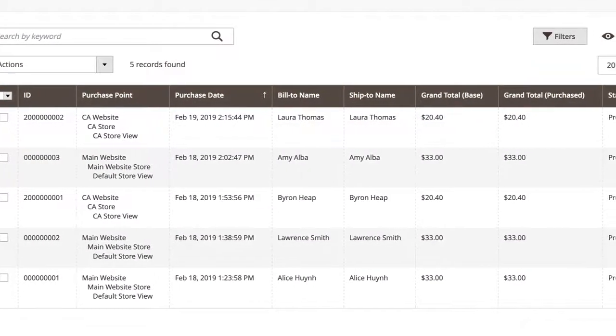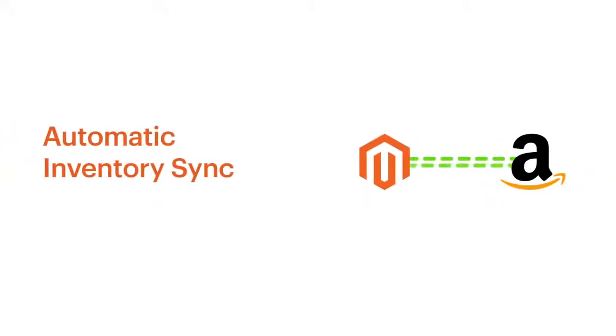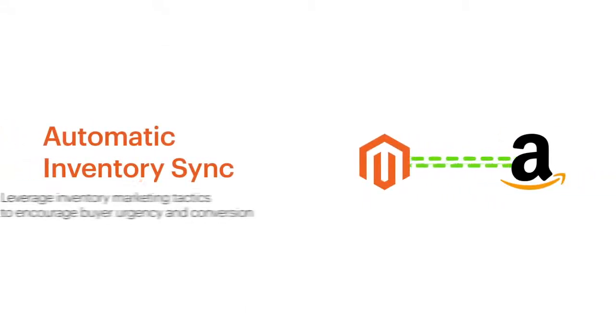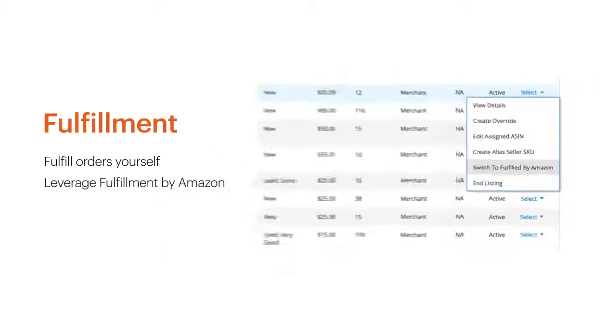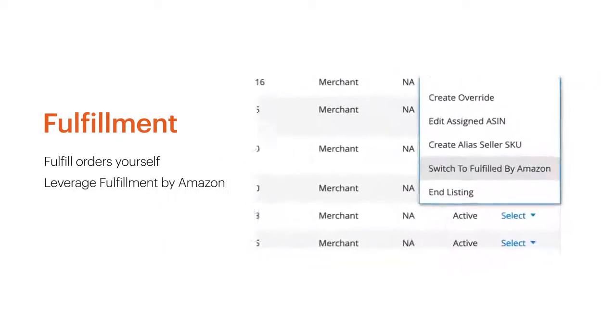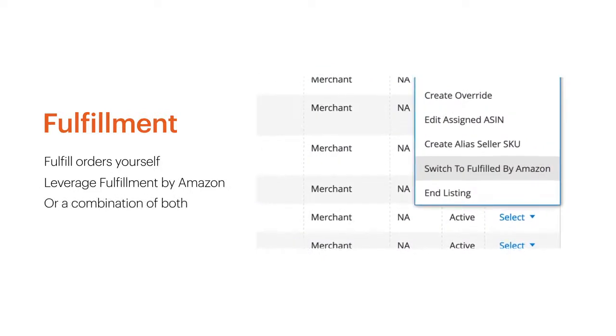Keep inventory in sync with Amazon orders automatically and leverage inventory marketing tactics to encourage buyer urgency and conversion. You can fulfill orders yourself, leverage fulfillment by Amazon, or a combination of both to get your products into customers' hands.